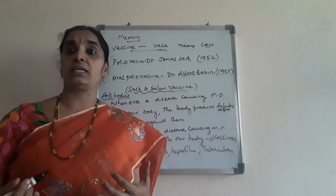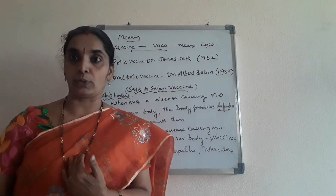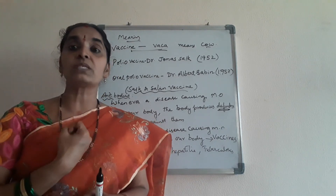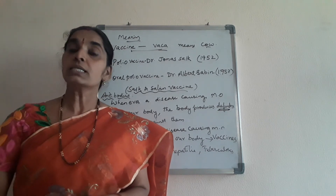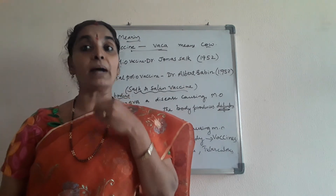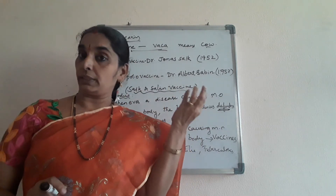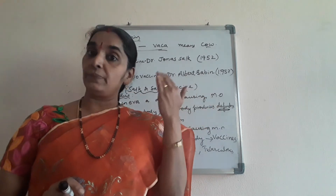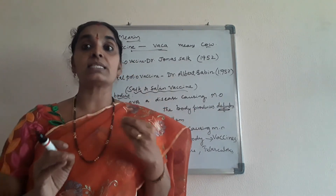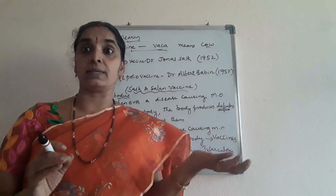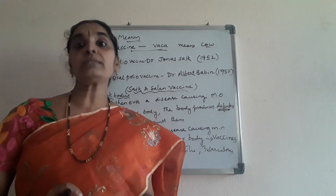Now, what happens when a vaccine enters our body? Vaccines are weakened microorganisms. When a microorganism enters our body, the body develops defenders to fight against it — these defenders are called antibodies. When vaccines are injected into our body, they are already present, so when a disease-causing germ enters the body, the antibodies already know how to fight and save our body from the disease.